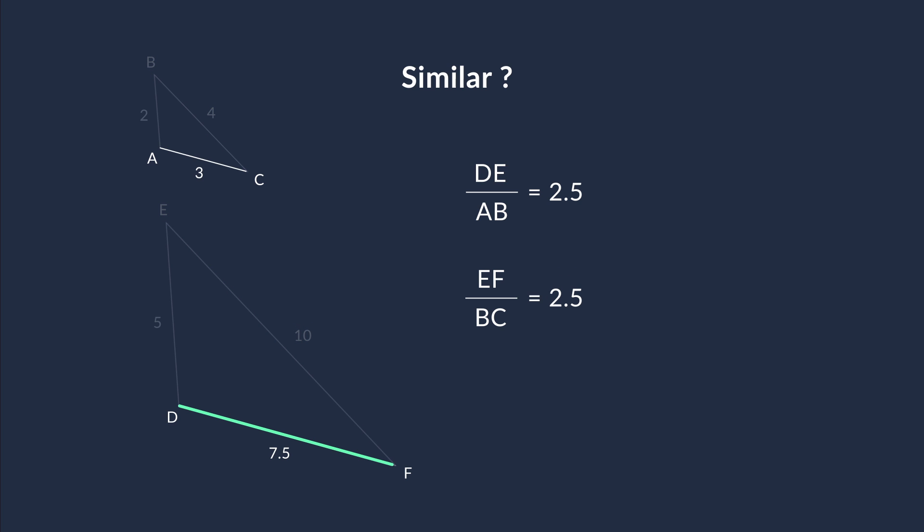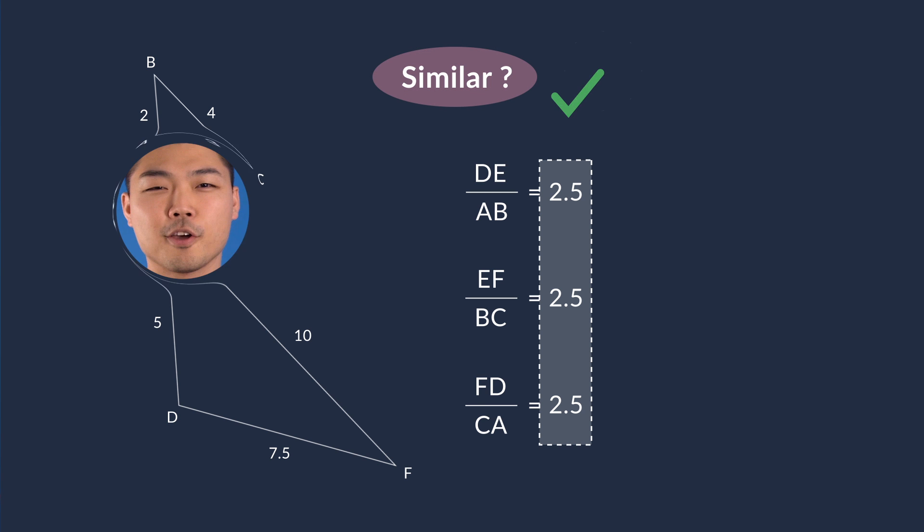Lastly, FD over CA is 7.5 over 3, which also gives us 2.5. Aha! And as we can see, the ratios between each corresponding lines are the same. This means that the triangles are in fact similar figures. Great!